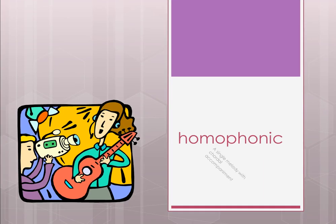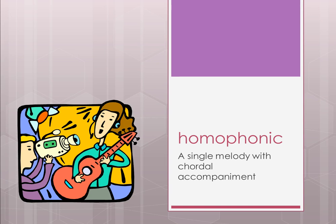Homophonic is the music we listen to most of the time. It means a single melody with chordal accompaniment. The little person singing with a guitar illustrates this: the guitar is the chordal accompaniment and the person is the melody. But the melody could be a saxophone with a concert band or orchestra behind it — it doesn't have to be a singer; it can be any melodic instrument.